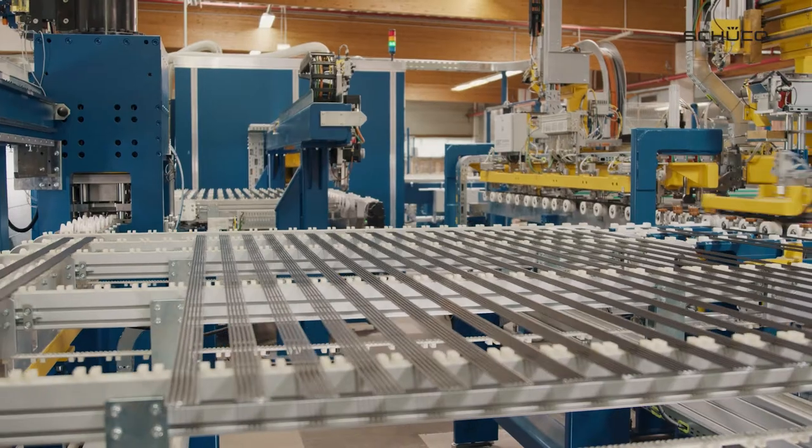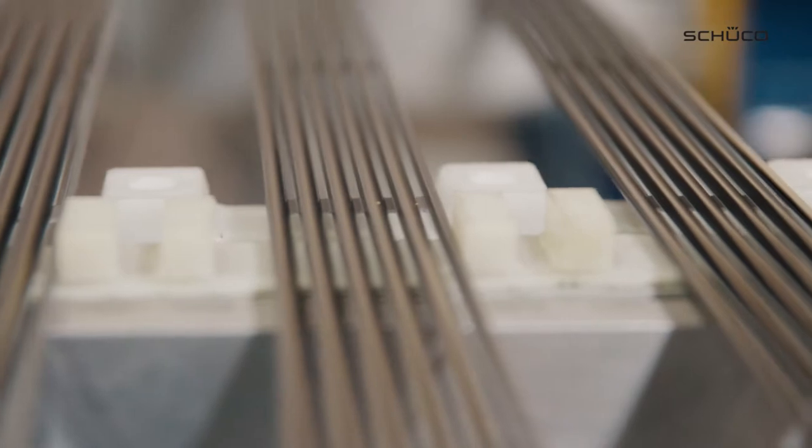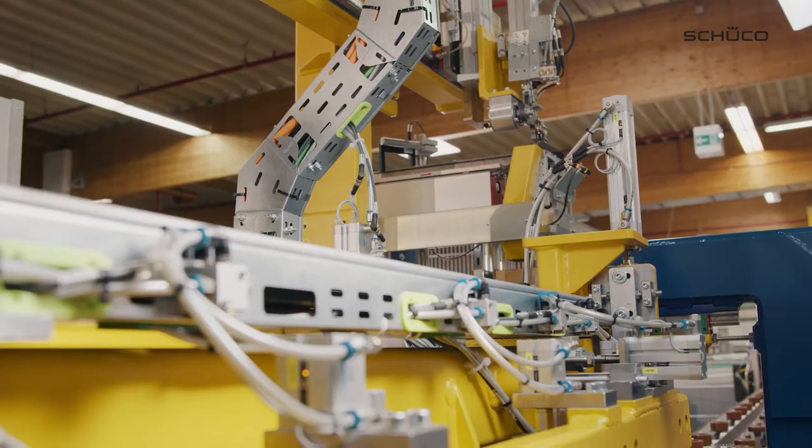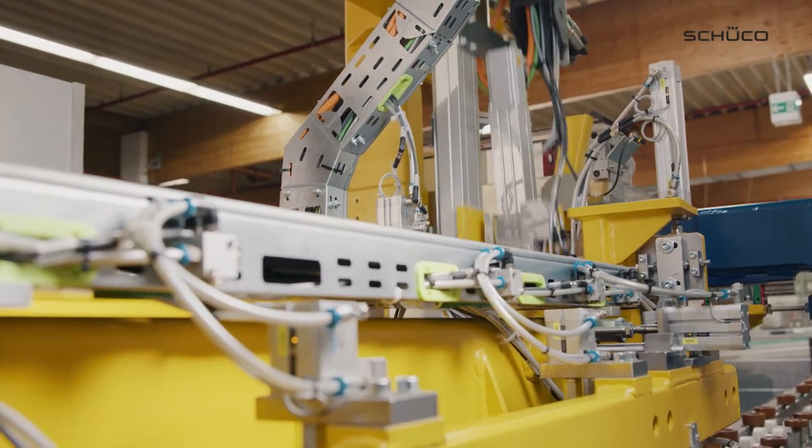The special louvre blade geometry of the Shuko CSB system ensures you have a good view to the outside whilst also providing shading for the room.